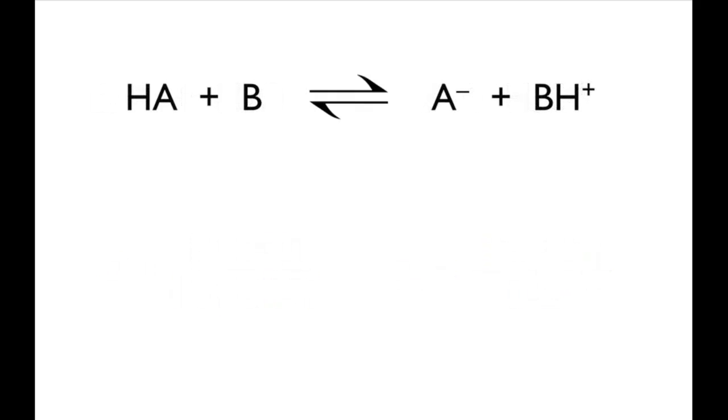If you look at any acid base reaction, you can define an equilibrium constant Kc. If you look at this expression carefully, you'll see that the concentration of A- over the concentration of HA is related to Ka for HA.